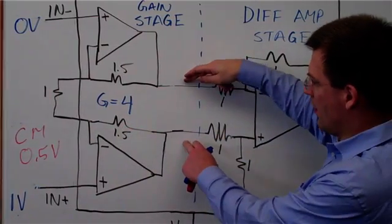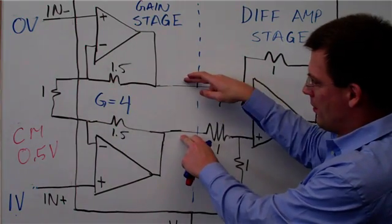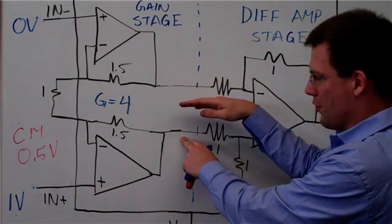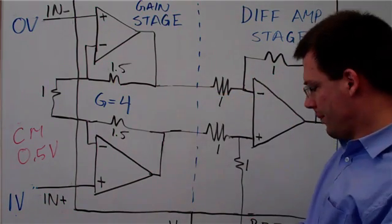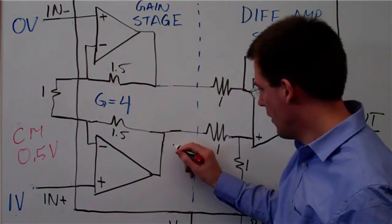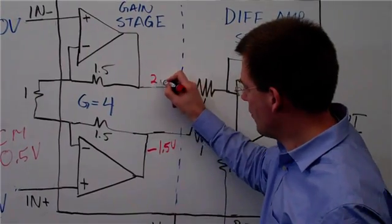So here I should have a differential voltage of four volts. So four times my one in the inputs. But I should still have a common mode voltage of 0.5 volts. So if I look at what that turns out to be in terms of voltages, that ends up being negative 1.5 volts here and 2.5 volts here.